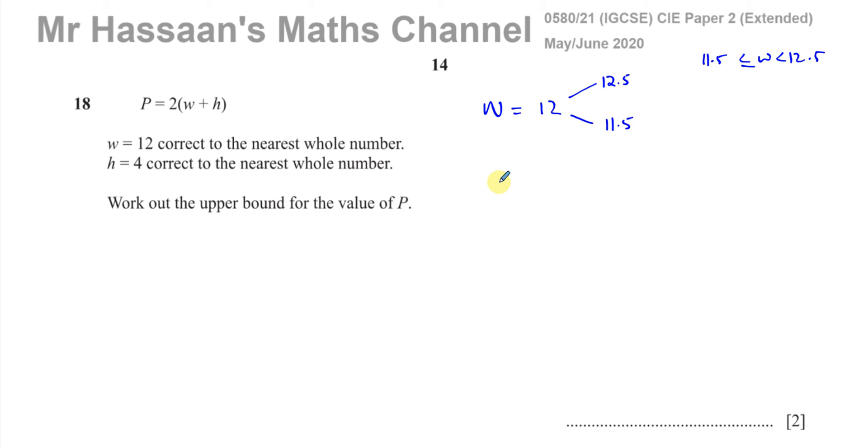We don't say 12.4 or 12.49 or anything like that, because there's always going to be a number higher than that which will round to 12. You keep going and you'll find always a number. So you write down 12.5 as the upper bound, meaning everything just before 12.5. That's a very important point there.